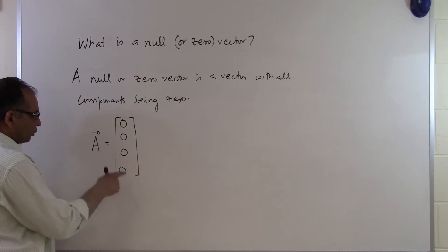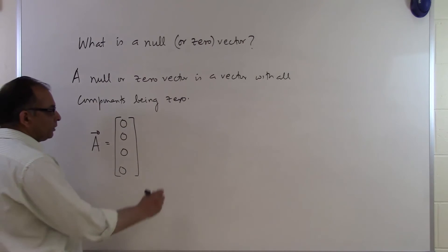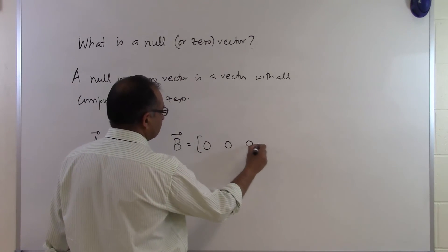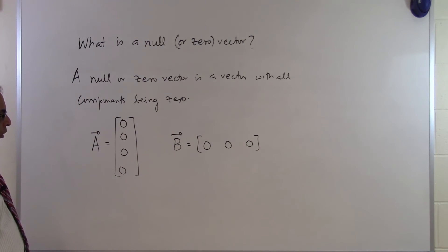So I will call this to be a null vector or a zero vector. I can have another example like this. Zero, zero, zero for example. It's a row vector which has all components zero. So that's also a zero vector.